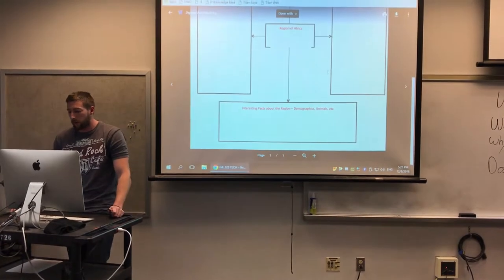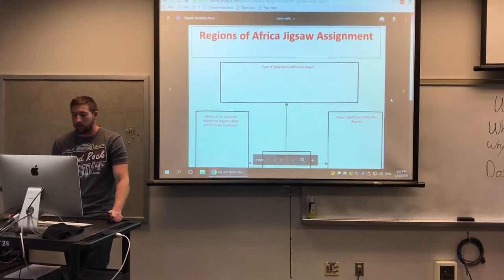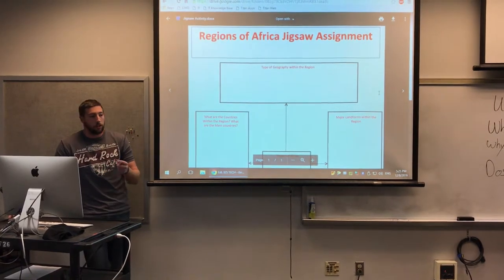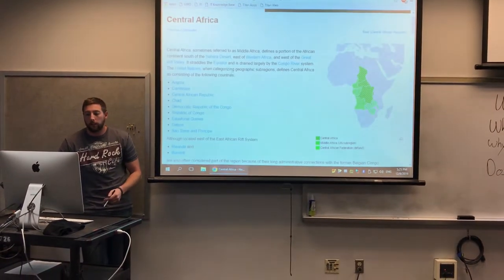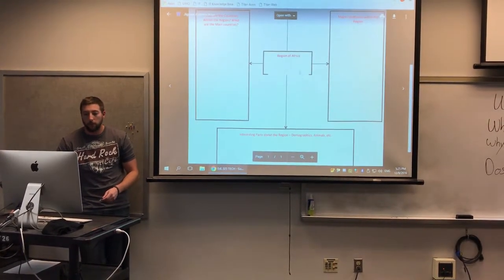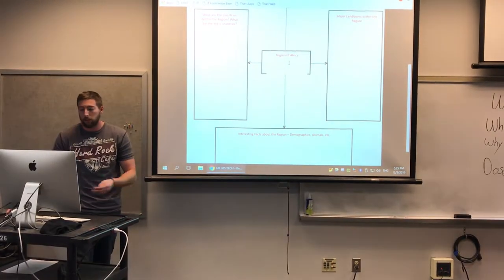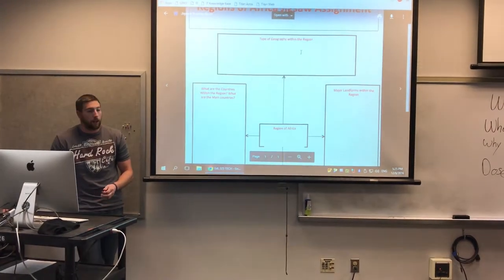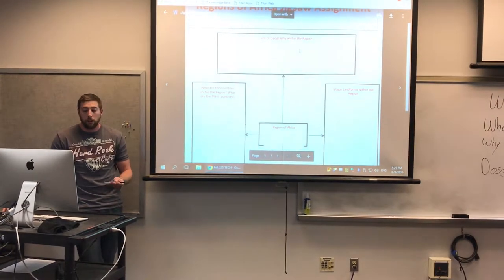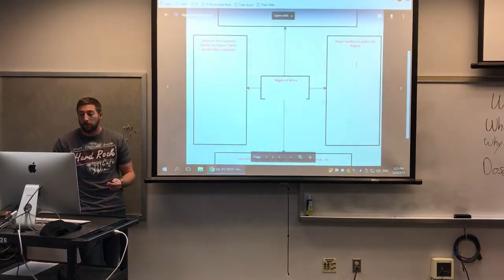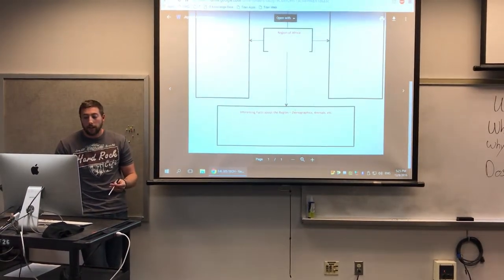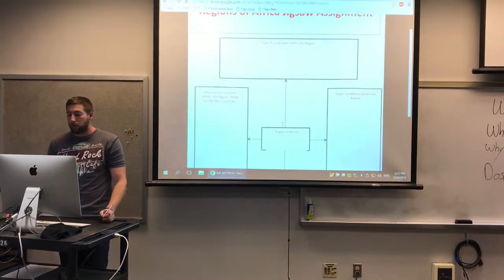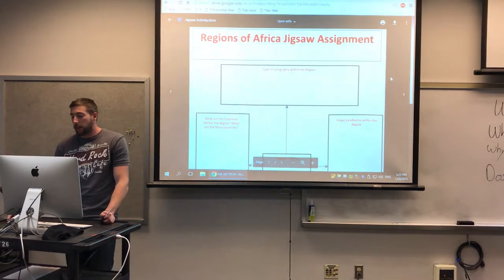Using the graphic organizer I handed out, you will go through the website and find information. In the middle, write your region — so for Central Africa, put that down. Then look for the types of geography, the countries, what landforms are there, and any interesting facts such as demographics and animals.